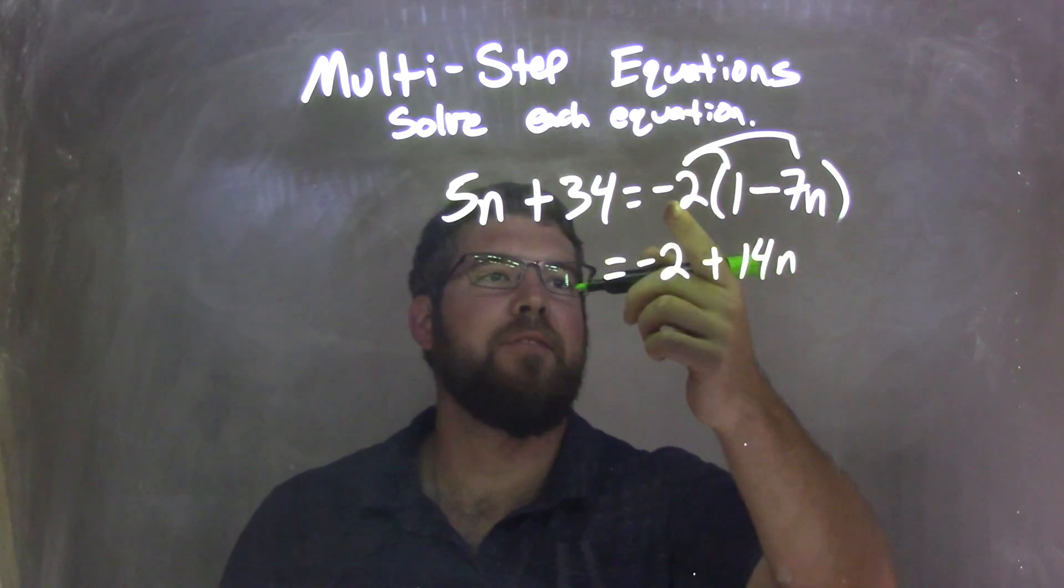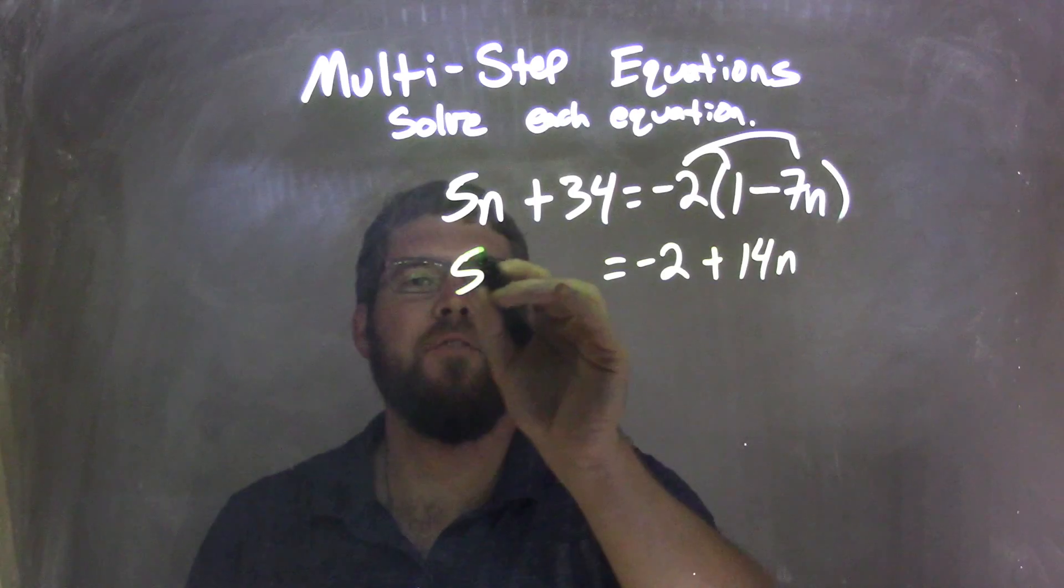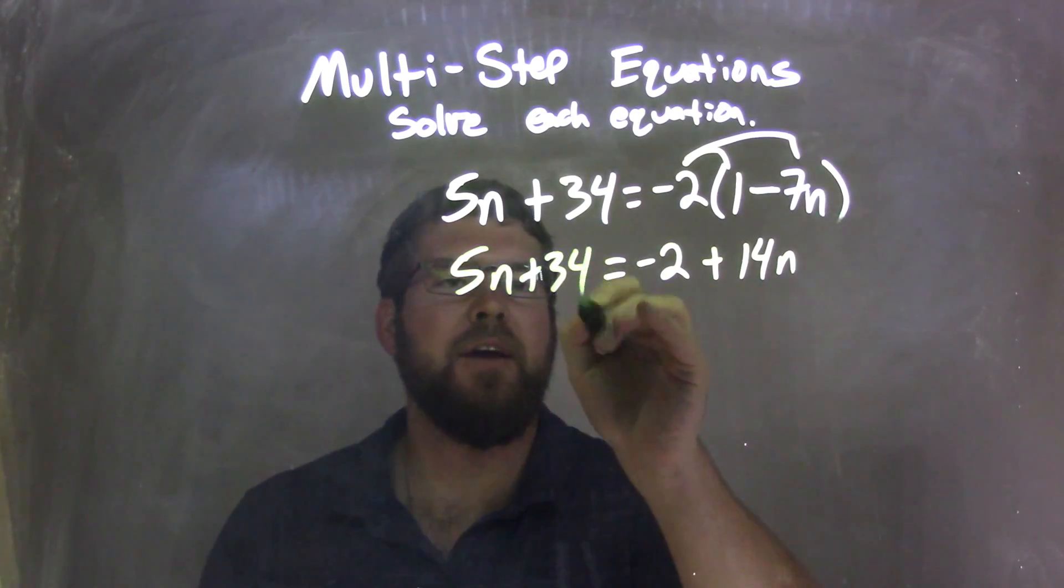Okay? Be careful, negative 2, the negative makes it positive, 2 times 7 is 14. So, we have 14n here, and then I have 5n plus 34 right here, just bringing that down.